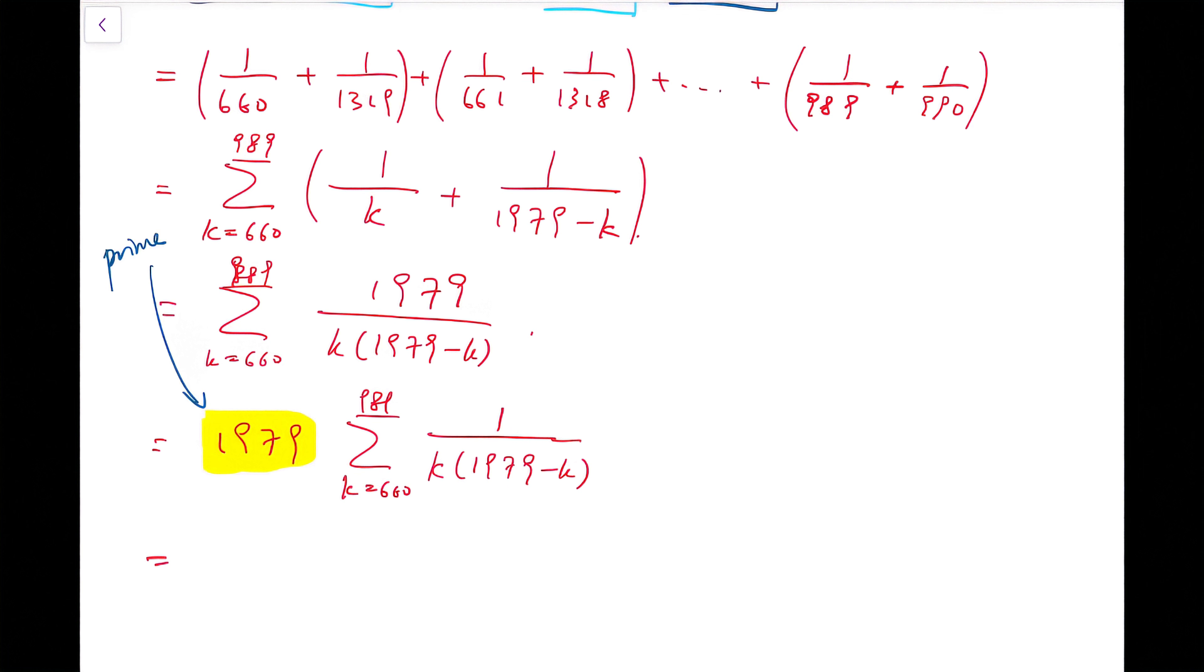So all the terms at the denominator that are of the form k or 1979 minus k, ranging k from 660 to 989, they all do not contain the prime factor 1979.